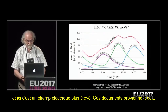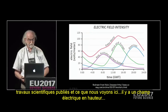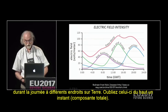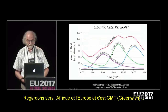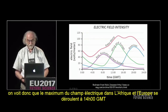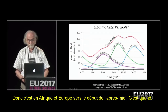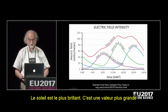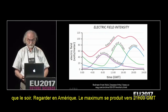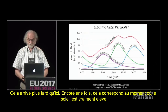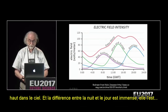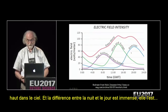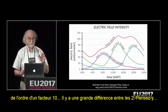This is taken from a published paper showing the electric field up high in different places on the earth. Looking at Africa and Europe in GMT, the peak electric field occurs at roughly 1,400 GMT — early afternoon, when the sun is the brightest. For the Americas, the peak occurs at about 2,100 GMT — again corresponding to when the sun is really up high in the sky. The difference between nighttime and daytime is huge — a factor of 10.